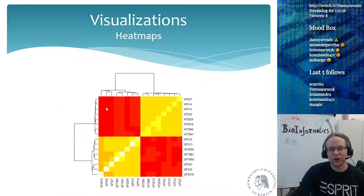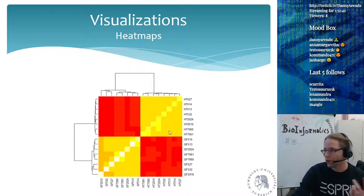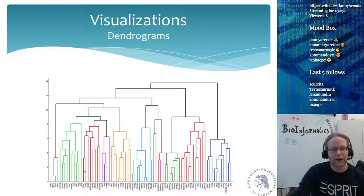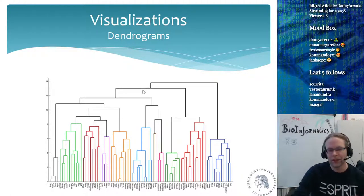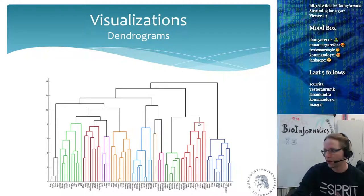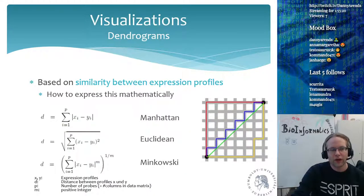Checking that hypothalamus is more similar to hypothalamus and gonadal fat is more similar to gonadal fat gives you a first quality check on your data. Heat maps and dendrograms are very coupled together — when you make a heat map it usually comes with a dendrogram showing the distance between different samples or between different probes. This is across samples, but you could also do correlation clustering across different probes. Dendrograms allow you to see different groups within your data.